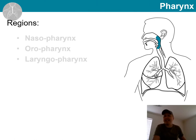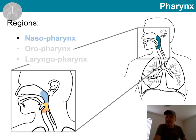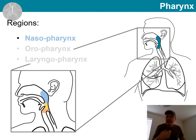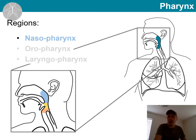The pharynx is divided into three parts. Let's start with the nasopharynx. Nasopharynx is located posterior to the nasal cavity, and it runs from there to the level of the soft palate and uvula. These close, separating the nasopharynx during the process of swallowing.